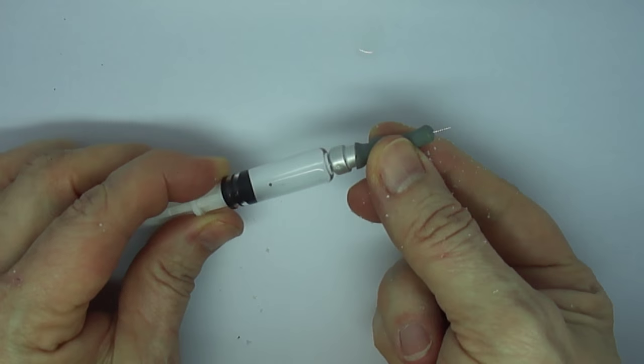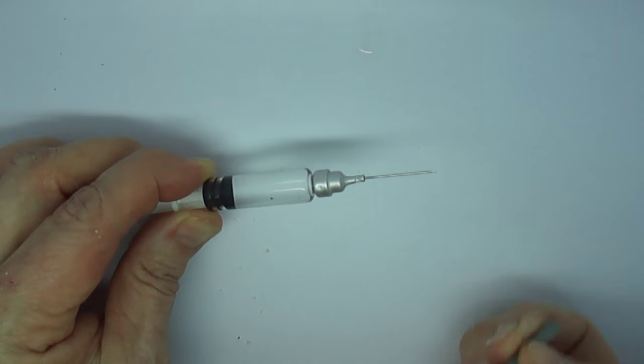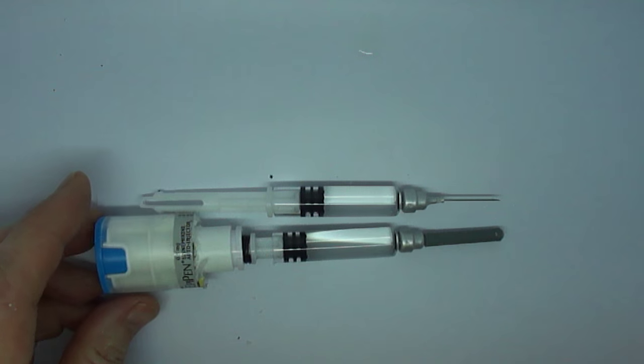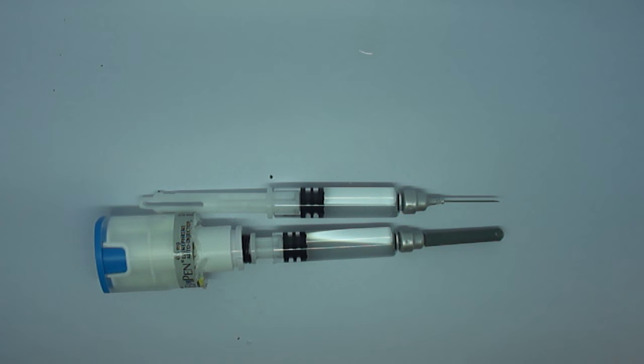Here is our needle. It comes with a little rubber stopper over it, which we're going to remove. Now we're going to look at this fired device versus this unfired device, and you can see that there is about a centimeter or so difference in where the plunger is.